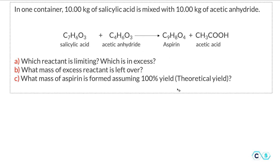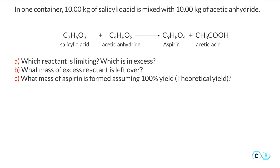We're going to address the first three questions, questions A to C, and then continue to the other questions. The first thing we need to do is find the moles, because unless we know the moles, we cannot do any calculations in stoichiometry. So first, determine the moles of salicylic acid.